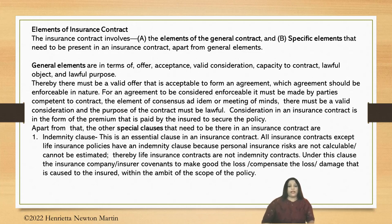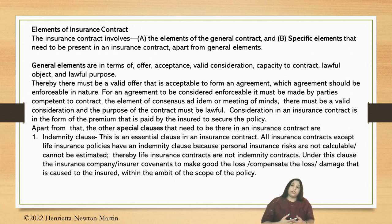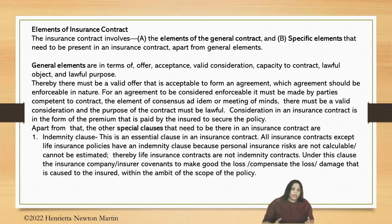For example, if A contracts with B to sell drugs to him — drugs is an illegal business, not permitted by law — this is not a valid contract because the object of the agreement between A and B is unlawful. Can such a dealing be covered by insurance? The simple answer is no, because in an insurance contract the object or subject matter also has to be lawful. If A tries to contract with B for the sale of drugs and apprehends losses in transit, he cannot procure an insurance policy because any insurance policy against subject matters that are against the law — the object itself is unlawful — will not be insured.